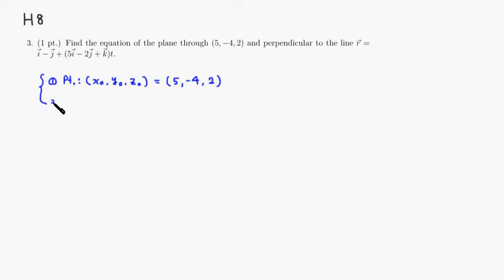And the second piece of information we need to find is the normal vector, which is perpendicular to the plane. We're going to use the notation vector n for normal vector. Since this guy is perpendicular to this line, we can use the direction vector of this line as the normal vector of the plane, which shows up right here. So this is the normal vector.